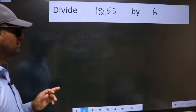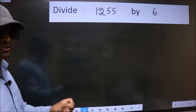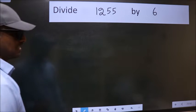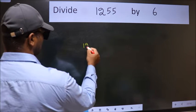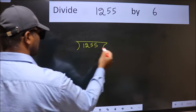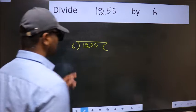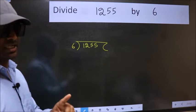Divide 1255 by 6. To do this division, we should frame it in this way. 1255 here, 6 here. This is your step 1.